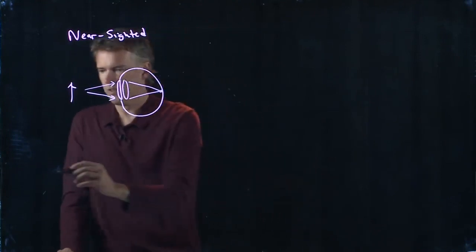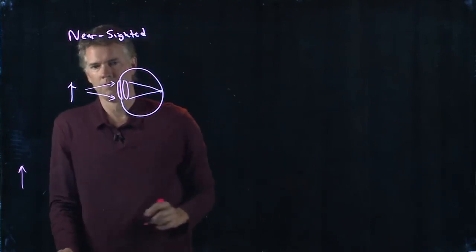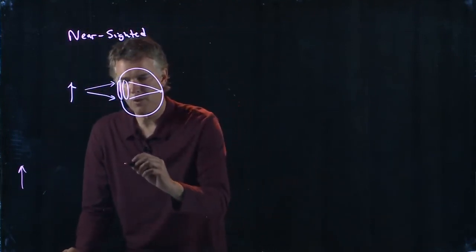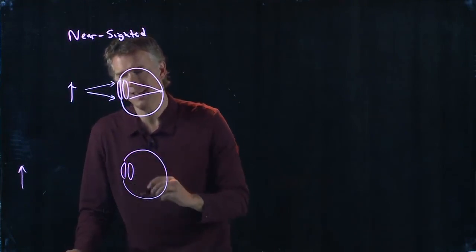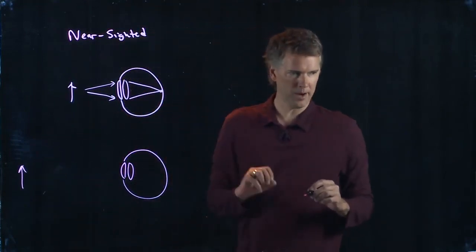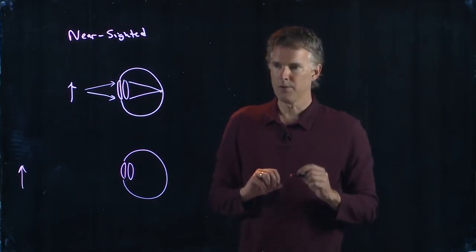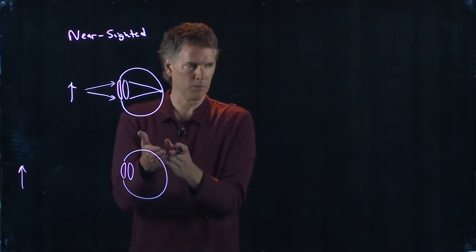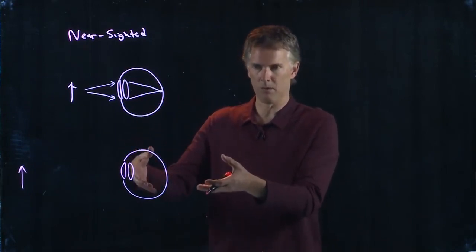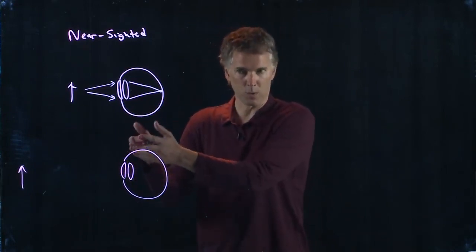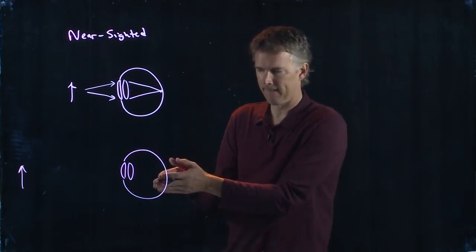But you want to be able to see things at distance. And so at distance, the rays that are coming in are very close to parallel. And you can't focus those to the right spot, either because your eyeball is a different size than normal, or the focusing power of your cornea is different.